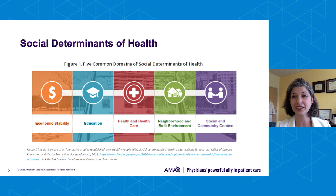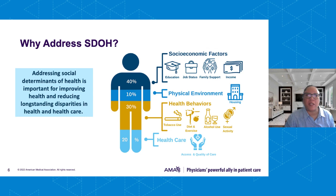This definition comes from Healthy People 2020, and it breaks down into five common domains of social determinants of health on which many frameworks are built. The bottom line is that things external to clinic walls have a huge impact on our patients' health and outcomes. Addressing social determinants of health is important for improving health and reducing our longstanding disparities in health and health care. This diagram shows the factors — whether socioeconomic, physical environment, health behaviors, or health care — that impact people's health.